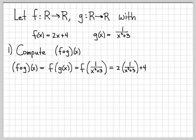And we can't really simplify this a lot. I guess we can multiply the 2 out to have 2 over x squared plus 3 plus 4. So this is f composed of g. And that is our answer.